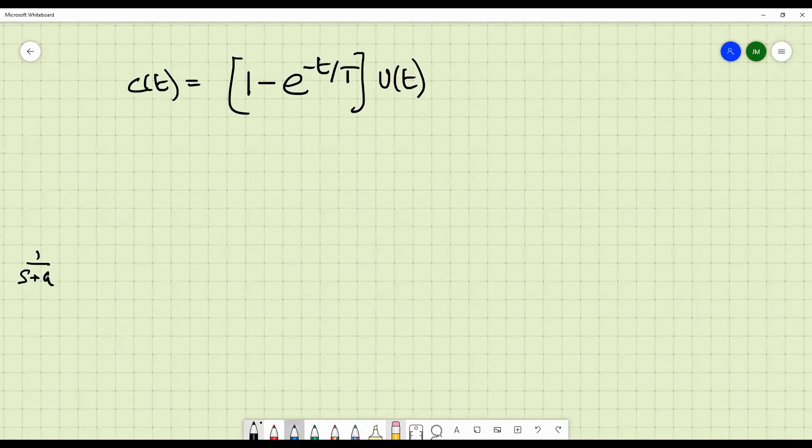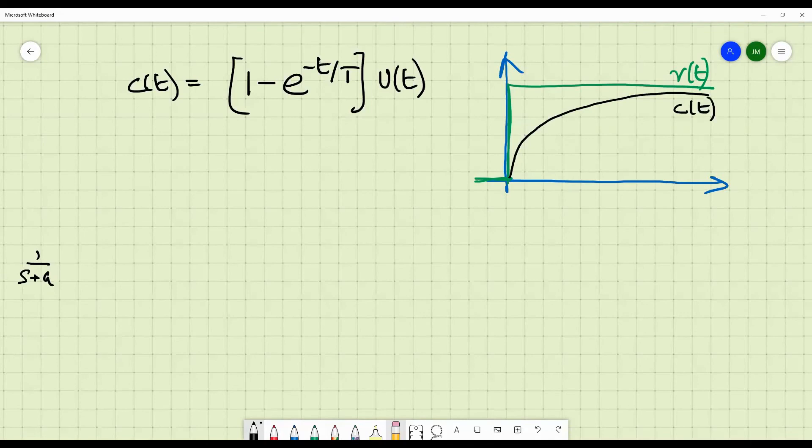Now, if you try to plot this response, let us first draw the step input. This is R of T. And now if you try to draw C of T, this is basically a rising exponential. How did I suddenly get that this is a rising exponential? Was it magic or something? No. You just need to plot C of T for various values of T. So, T and C of T. At T is equal to 0, C of T has to be 0 because this E power minus T by T is 1.